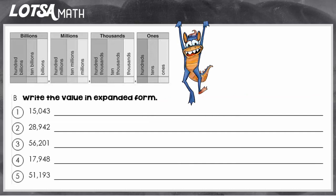So let's look at some examples. Okay, so let's look at number two. We have the number 28,942. We're going to write this in a way where we can see what each digit is actually worth.